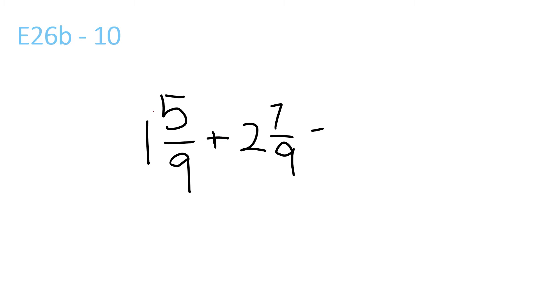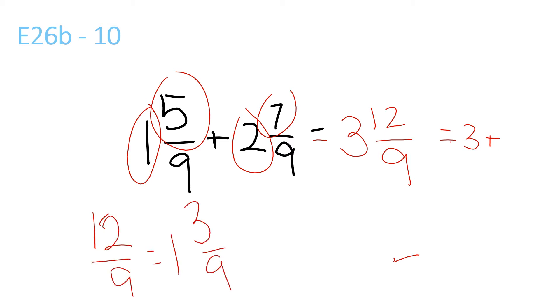This one is just, 1 plus 2 is equal to 3. 5 plus 7 is 12, over 9 equals, 3 plus, just a side note again, 12 over 9 equals to 1 and 3 over 9, because 9 goes into 12 once, remainder 3 over 9. 3 plus 1 and 3 over 9 equals, 3 plus 1 is 4, and 3 over 9. 3 over 9 can be reduced to 1 over 3, so it's 4 and 1 over 3, 4 and a third, that's the answer.